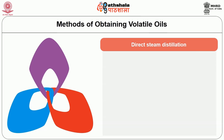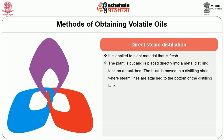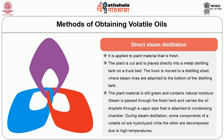The next one is direct steam distillation. It is applied to plant material that is fresh, for example peppermint or spearmint. The plant is cut and placed directly into a metal distilling tank on a truck bed. The truck is moved to a distilling shed where steam lines are attached to the bottom of the distilling tank. The plant material is still green and contains natural moisture; therefore, maceration is not needed. The steam is passed through the fresh herb and carries the oil droplets through a vapour pipe attached to the condensing chamber. During steam distillation, some components of the volatile oil are hydrolyzed while others are decomposed due to high temperatures.